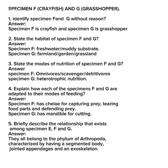Question three: state the modes of nutrition of Specimen F and G. Answer: for Specimen F it is omnivorous, that is scavenging; for Specimen G it is heterotrophic nutrition. Question four: explain how each specimen is adapted to their mode of feeding. Answer: Specimen F has chelae for capturing prey, tearing food, and defending; Specimen G has mandibles for cutting.